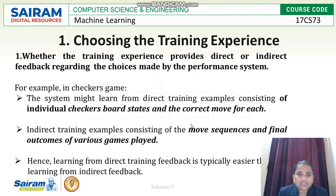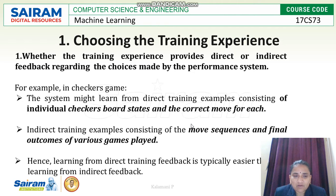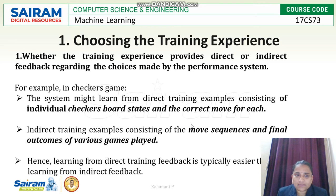Whether the training experience provides direct or indirect feedback regarding the choice made by the performance system — the final design will have a performance system. Taking the checkers learning game as an example, the system might learn from direct training examples consisting of individual checkers board states and the correct move for each. Indirect training examples consist of move sequences and final outcomes of various games played. Direct training feedback is typically easier compared to indirect training feedback.